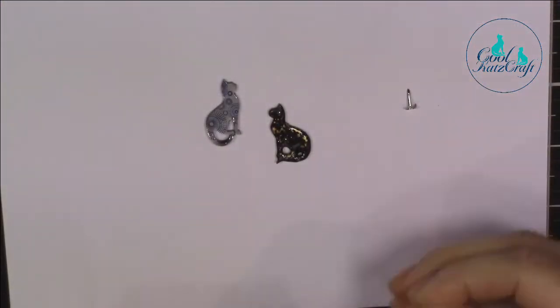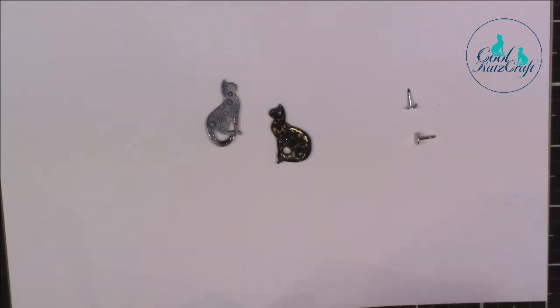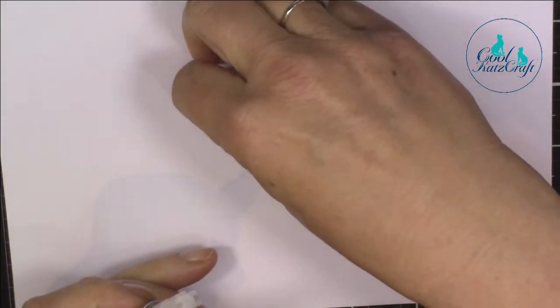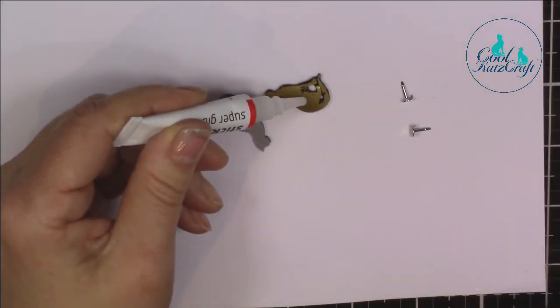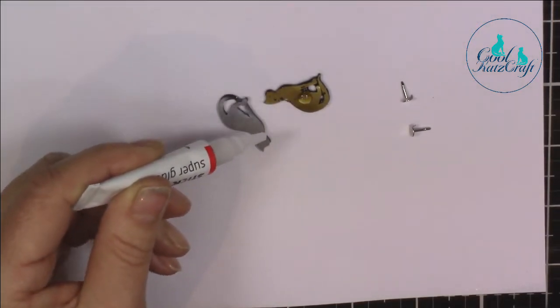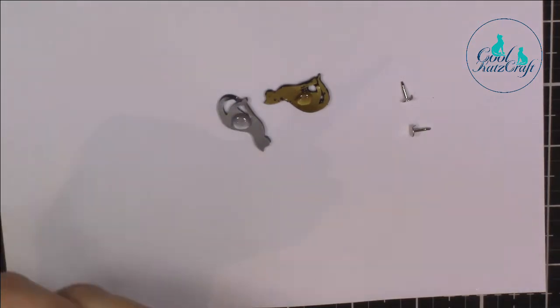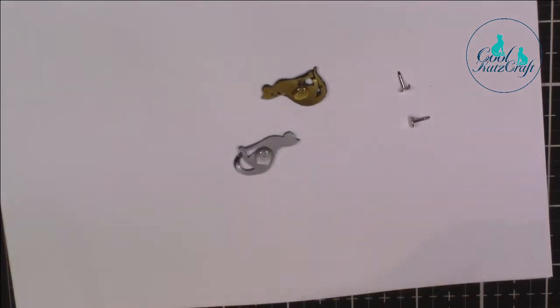Both our cats are now ready for the pins. I'll turn them over and add a drop of superglue onto the back of each, then carefully place the pin back into the glue.